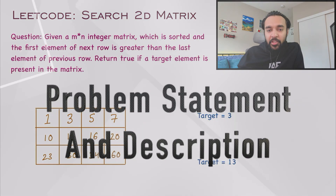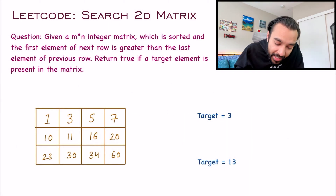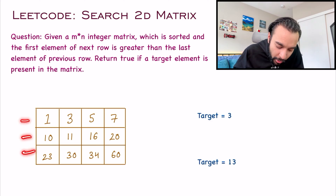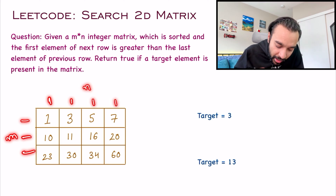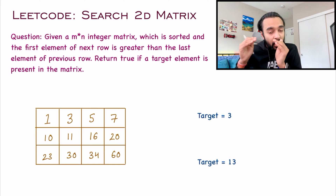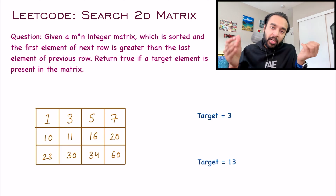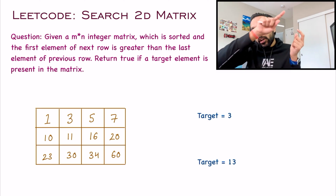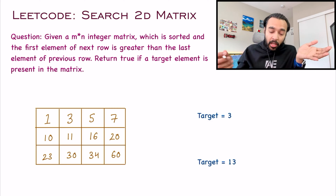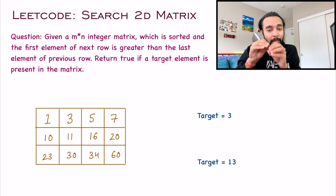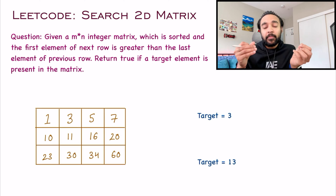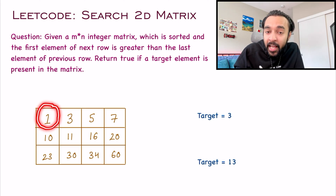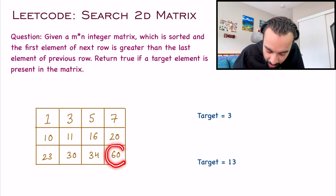First of all, let's make sure that we are understanding the problem statement correctly. In this problem, you are given an m cross n integer matrix — it simply means that you have m rows and n columns. Now, this array is sorted in a row-wise manner. A 2D array can be sorted in a lot of different ways: you can sort it row-wise, you can sort it column-wise, and you can also have a spiral kind of sorting. When it says this matrix is sorted in a row-wise manner, it simply means that you will find your least element as the first element and your maximum element will be the last element.